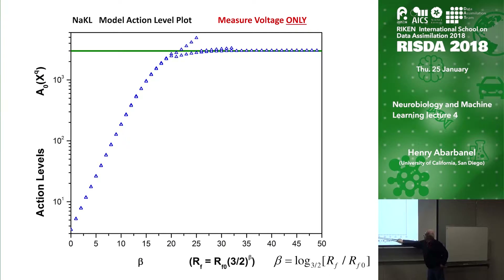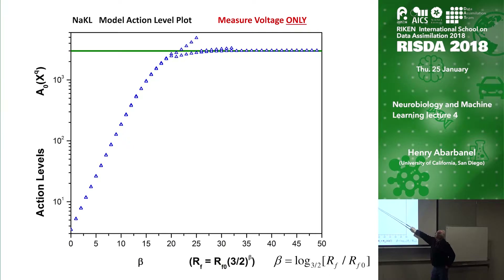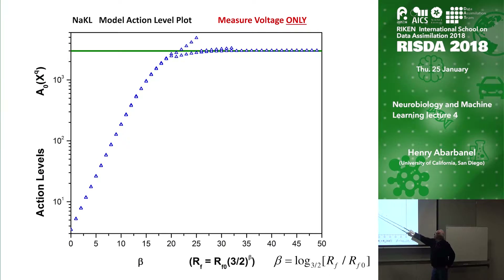Down here RF is small — not literally zero, so this is not minus infinity — but down here there are many minima all compacted together. As you increase RF so that the model becomes more and more precise, the action becomes independent of RF and there is exactly one minimum left — not only the global minimum, it's the only minimum.